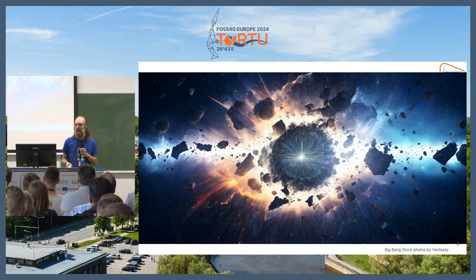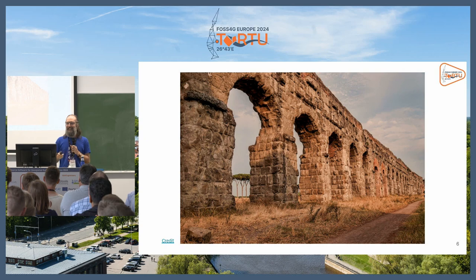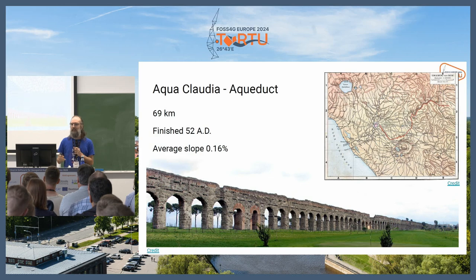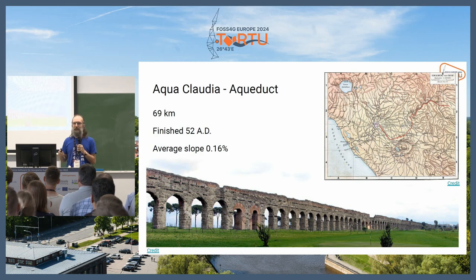So at the beginning there was an explosion, then came the dinosaurs, and later came the Romans. This is a picture of the Aqua Claudia aqueduct near Rome — about 69 kilometers long, built in the first century, with an average slope of 0.16%. To get an idea, the slope of a road to push rainwater to the sides is 2%, that's 12 times bigger. Otherwise the energy of the water can erode the surface and destroy the infrastructure.